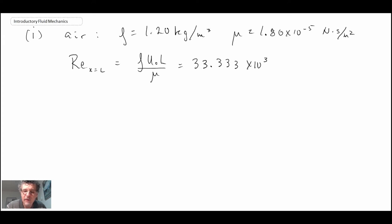So we get a number 3.3 times 10 to the 4, and this is less than our 5 times 10 to the 5, and therefore we can conclude that it is a laminar boundary layer. Consequently we can use the result from von Karman's momentum integral analysis.